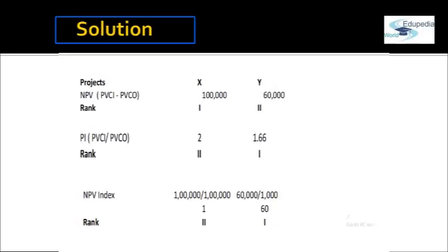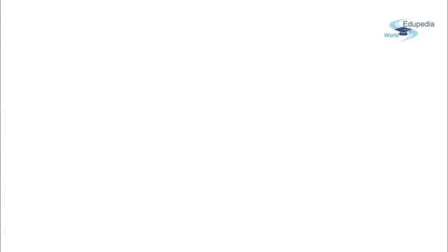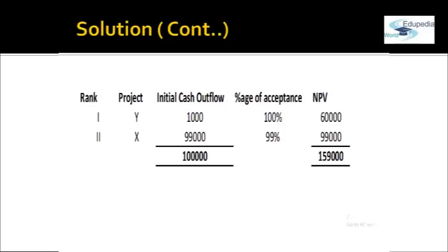But we are not going to use either of those techniques because the capital outflow is not at zero period. So we compute the NPV index: NPV of Rs. 1 lakh in project X divided by initial capital outflow of Rs. 1 lakh gives an index of 1; in project Y, the index is 60,000 divided by 1,000 which is 60. So project Y is ranked 1 and project X is ranked 2. Based on this ranking, if we allocate funds, we invest Rs. 1,000 for the initial cash outflow in project Y. The balance Rs. 99,000 could be invested in project X.